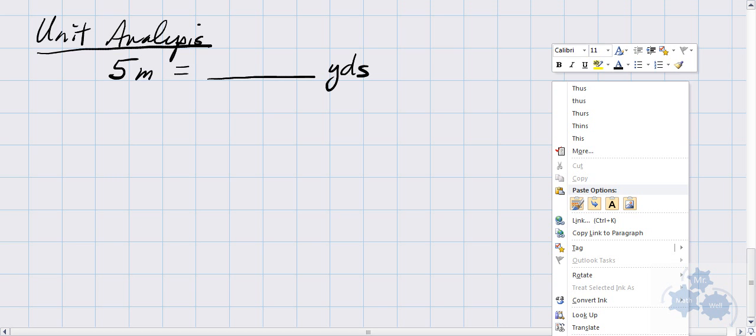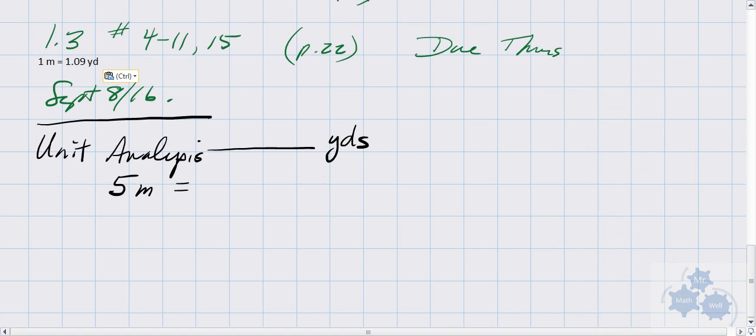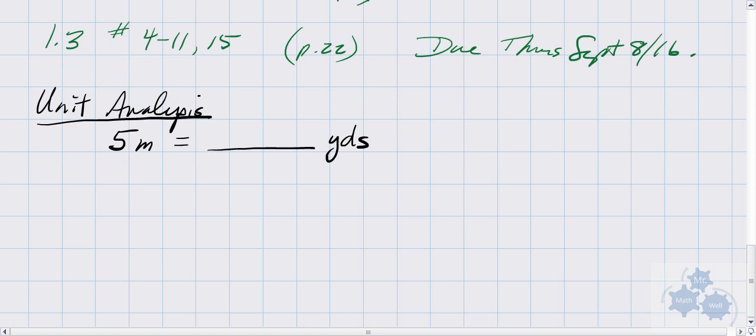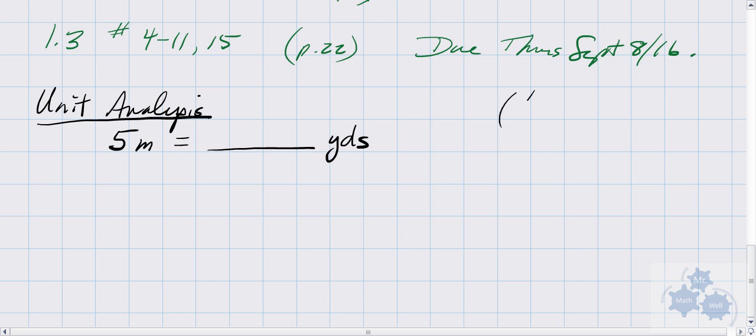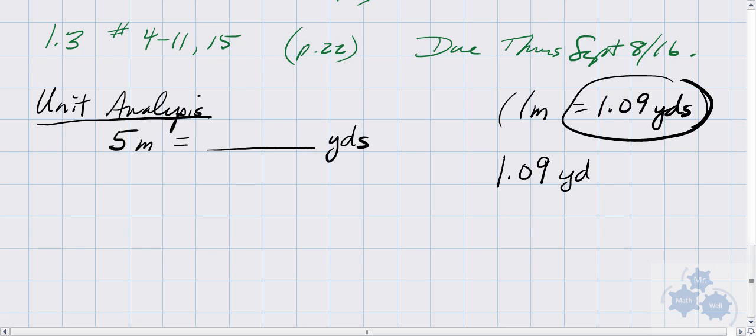I know that I have this value right here, 1 meter equals 1.09 yards. And this number right here can also be written as a conversion factor between yards and meters. It can be written like this, 1.09 yards is 1 meter.